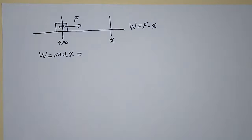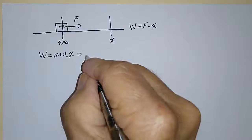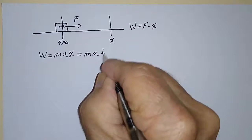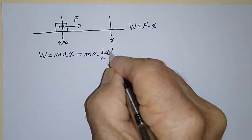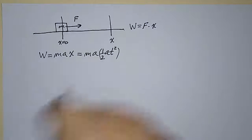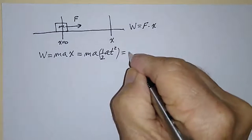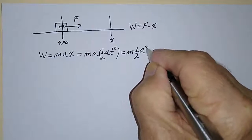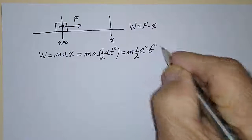constant, we know how X develops with time. So we can write this as M times A times one-half A T squared. We got that back in kinematics, so that's equal to M times one-half A squared times T squared.